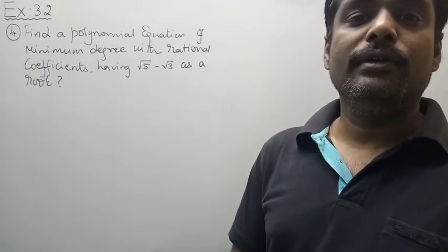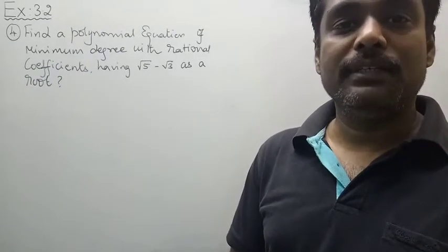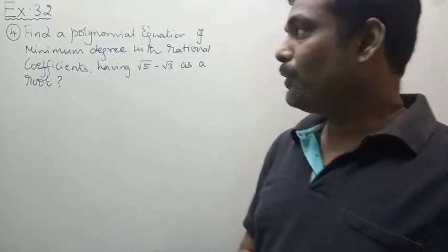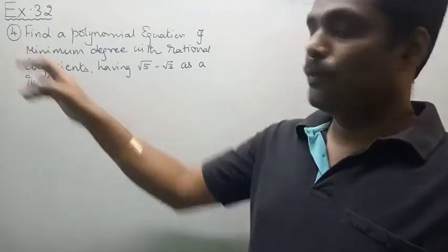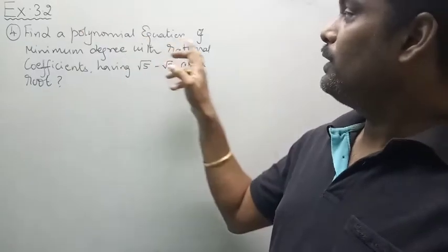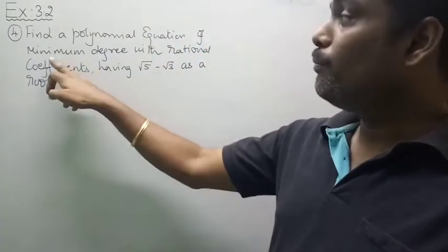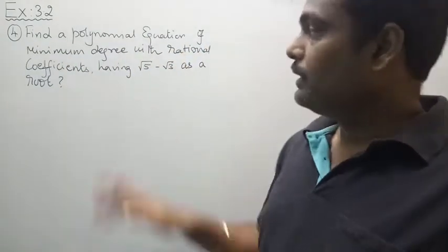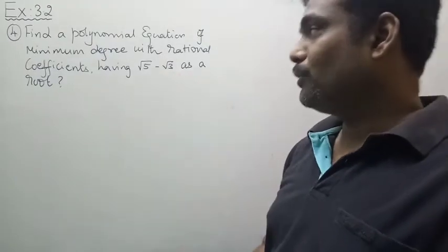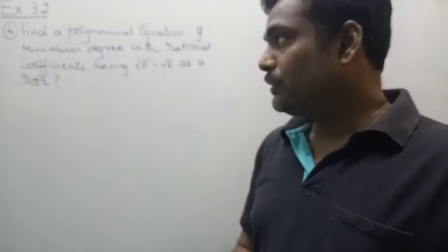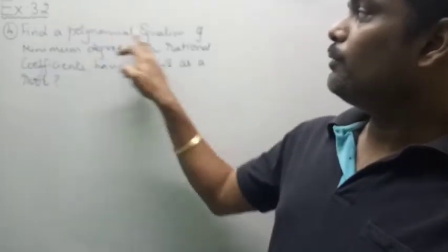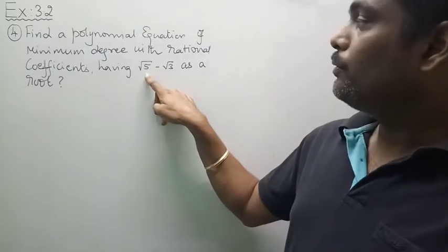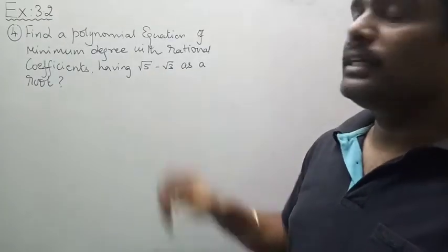Hi, my dear students. Today we will discuss Chapter 3, Theory of Equations, Exercise 3.2, Question 4: Find a polynomial equation of minimum degree with rational coefficients having √5 minus √3 as a root. In this case, you want to find out a polynomial equation of minimum degree.